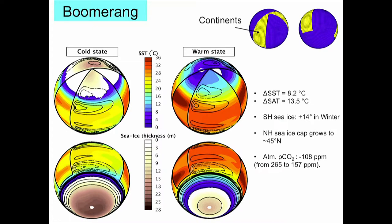We get two states: one is a cold state and one is a warm state. The warm state has an ice cap only at the south pole and very little sea ice at the north pole. The cold state has two big ice caps at both poles. They are stable — they exist for the same forcing and same parameters; they are just two realizations of the same dynamical system. The globally averaged sea surface temperature between the two simulations differs by about 10 degrees.